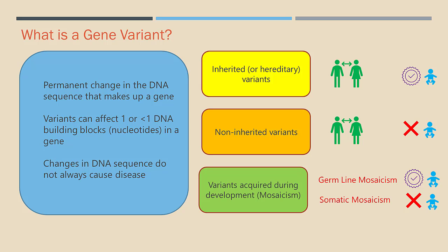On the other hand, if the mosaicism occurs only in a germline cell population, the individual would be unaffected, but his or her offspring could be affected.